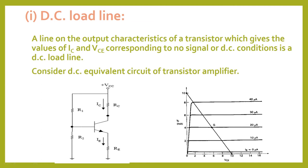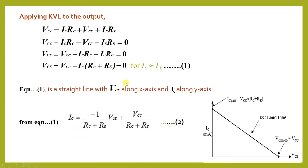This is very important: the DC load line corresponds to no signal condition. That means while considering the DC load line, we should not take AC conditions into account. No signal condition means AC signal is absent — no AC signal is applied. Under these conditions we get a straight line on the output characteristic curve.